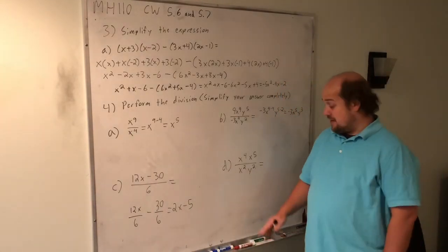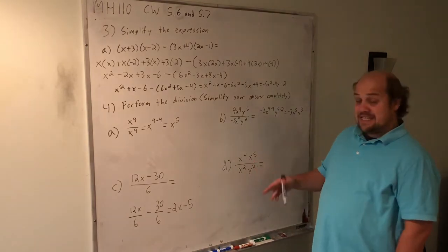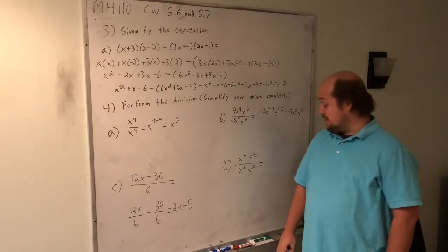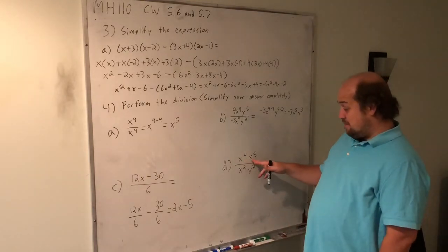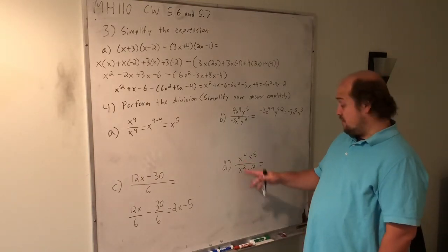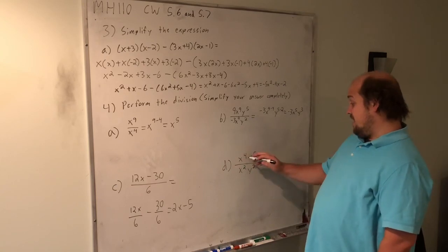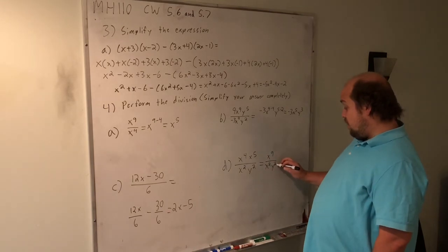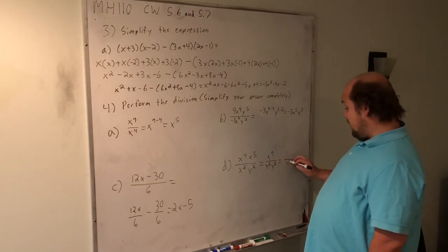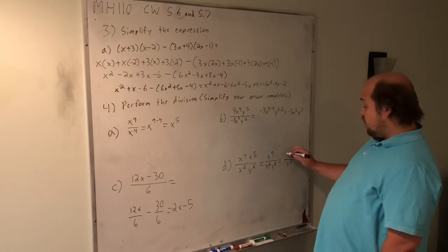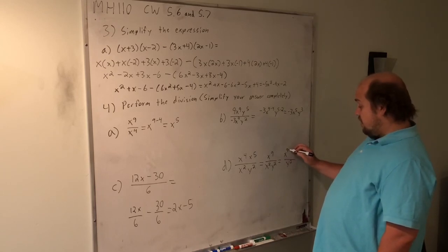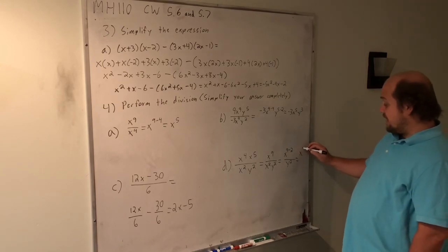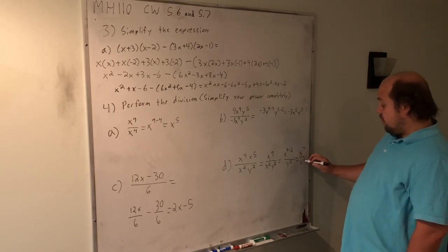Part D is a little bit of a trick. This is meant to mimic a problem on your own work. What I want to do first is combine the top exponents: x to the 4th and x to the 5th becomes x to the 4 plus 5, or x to the 9th. I don't have any other y's to deal with, so I can just leave that y squared on the bottom. On top, I have x to the power 9 minus power on the bottom 2. That's why my final answer is x to the 7th over y squared.